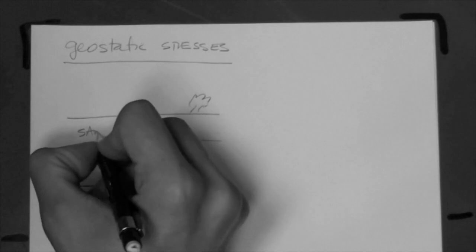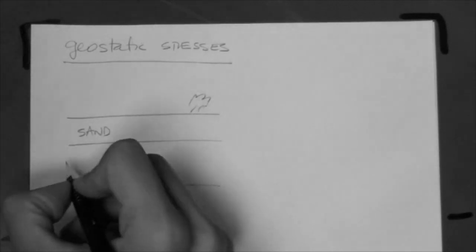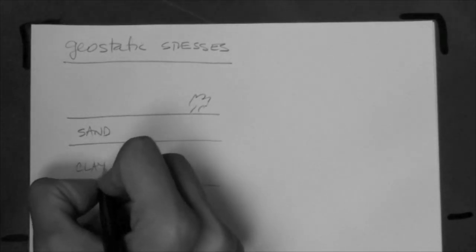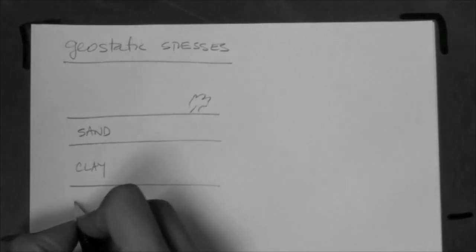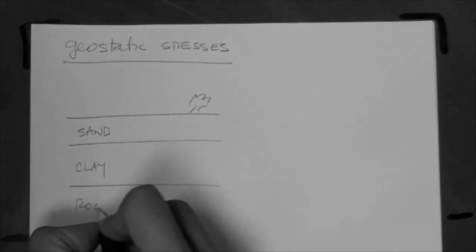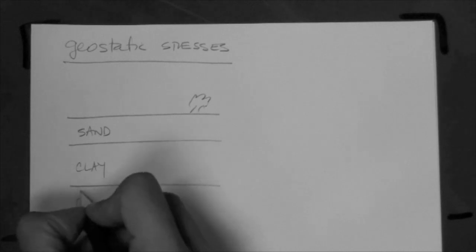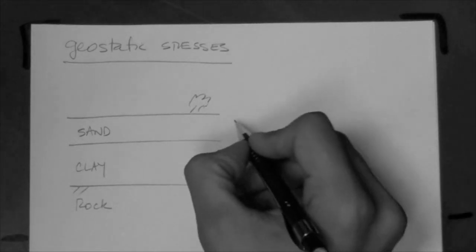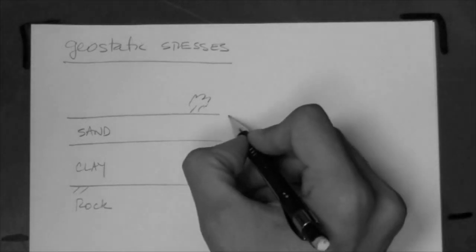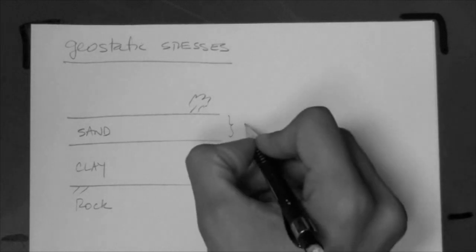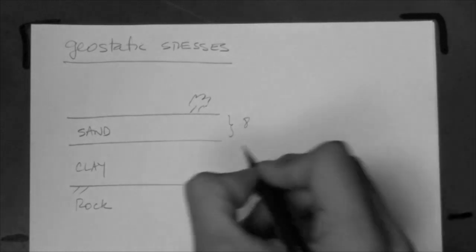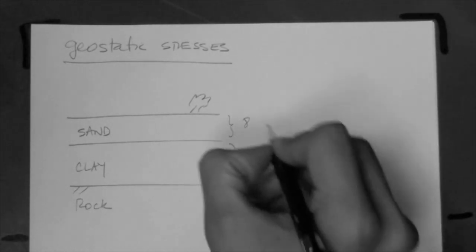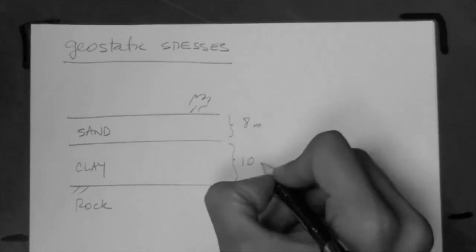So this could be a sand, and let's say this is a clay, and then down here we have rock. We have different thicknesses — this could be, for example, eight meters, and this would be ten meters.